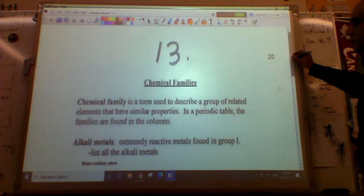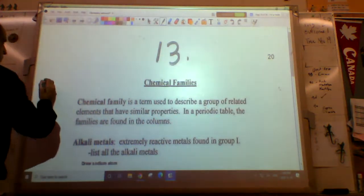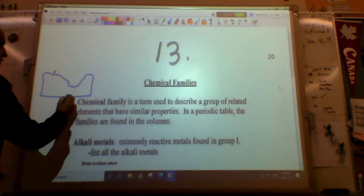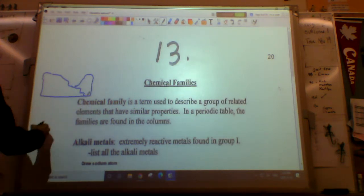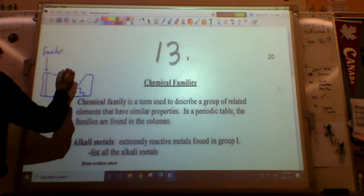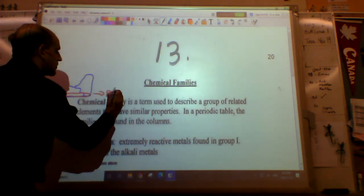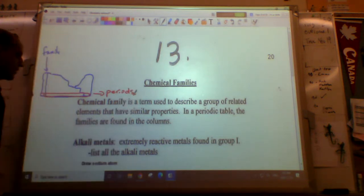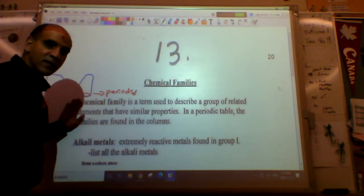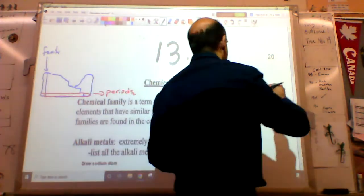We're going to look at chemical families - the term used to describe a group of related elements. On your periodic table, there's your staircase line that separates it. Families go this way vertically, and going horizontally is periods. If they're in the same family, they behave the same way. If they're in the same period, they have the same number of electron shells.